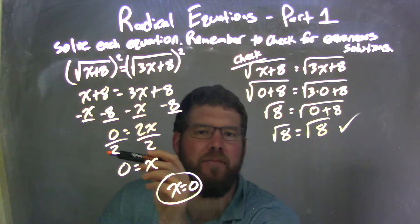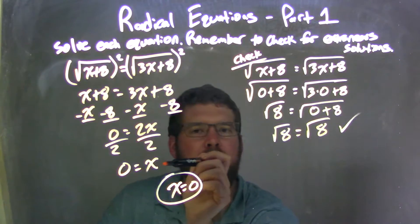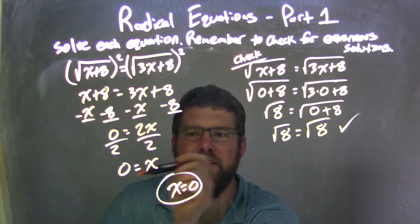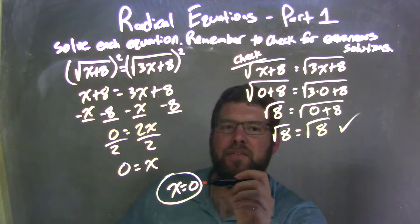I divided both sides by 2, doesn't change much, but it just gives x by itself here, and I have 0 equals x, right, 0 divided by 2 is 0. I rewrote that to have x come first, so it looks nicer, so I have x equals 0 here.